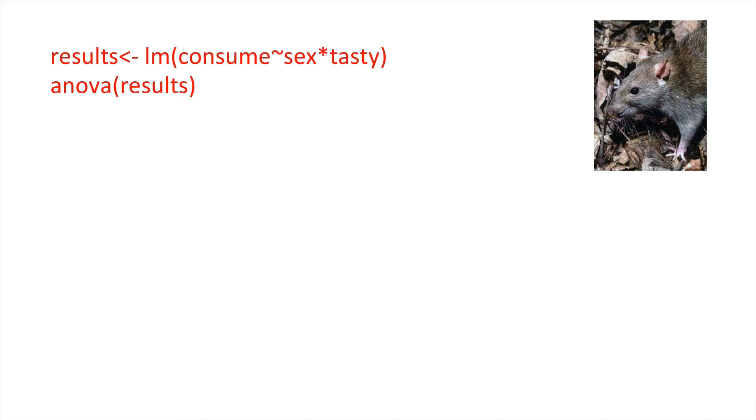How do we fit a factorial analysis of variance? With a factorial analysis of variance we're looking not just at the main effects but also their interactions. And so here we're fitting a linear model with consumption and sex times tasty. You'll remember that the times represents a fit of a model with interactions. And it knows straight away that sex and tasty are both categorical variables that have been defined in that way.